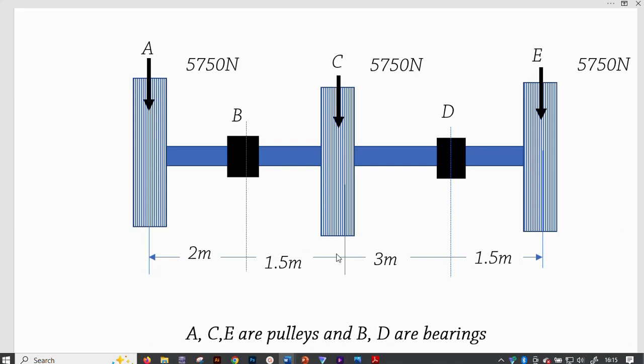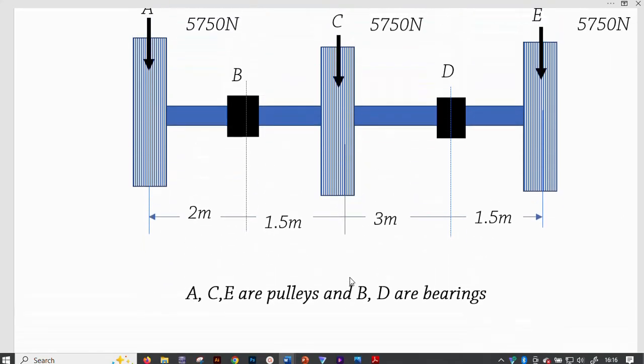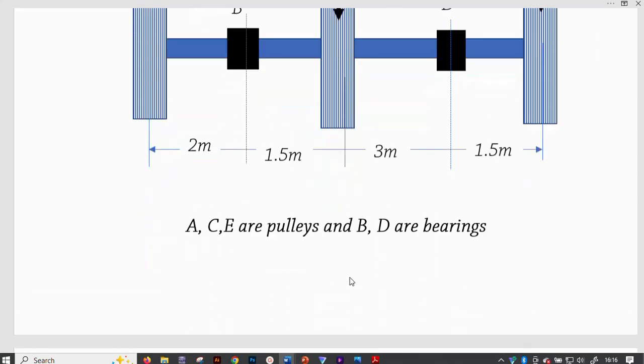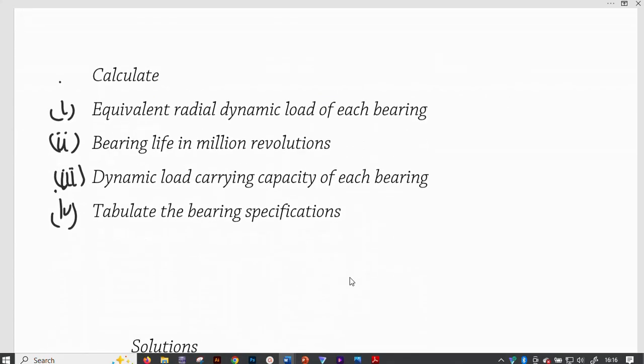In total, it should give you 8 meters. Now, B and D are bearings. Then, A, C and E are pulleys as already determined.